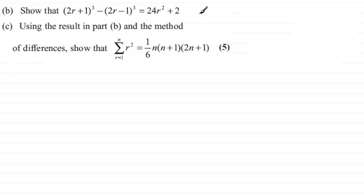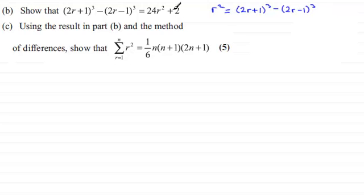So what I'm going to do is rearrange this formula to make r² the subject. So r² is going to equal: we've got (2r+1)³ minus (2r-1)³, and then if I subtract 2 from both sides that gives me 24r², and then if I divide this all by 24 then I've got r² equal to this.